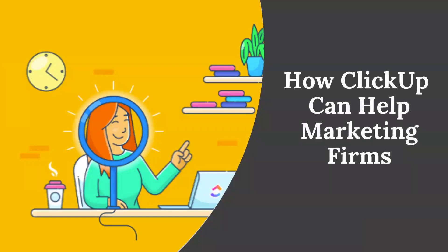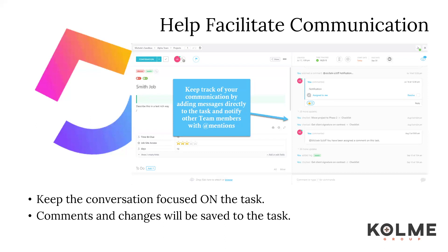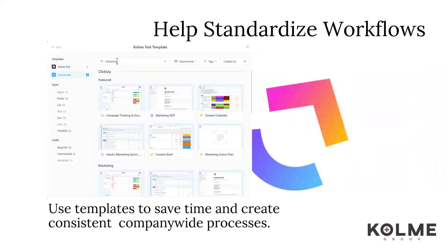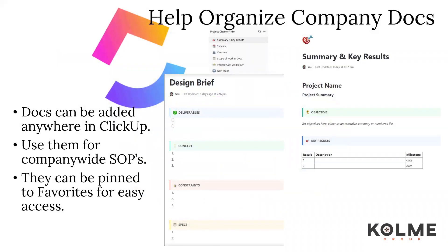How can ClickUp help your agency overcome these common issues? ClickUp can help facilitate and organize communication by posting comments directly on projects or tasks. This keeps the conversation focused on the topic or task that initiated the discussion. Communications are saved on the task allowing team members to view what has been done and keeping track of changes. Create consistent standardized workflows using ClickUp templates. Consider automating repetitive tasks to save time and make sure nothing is lost or skipped.